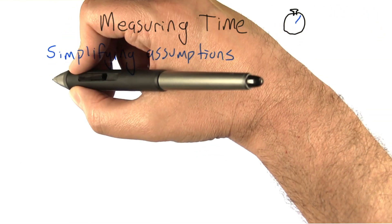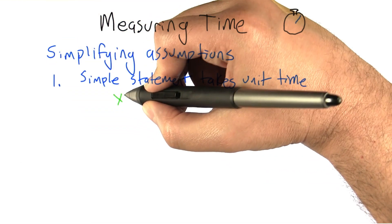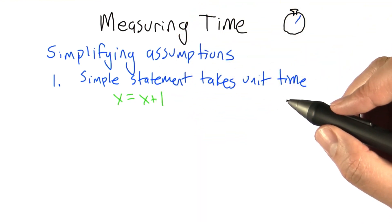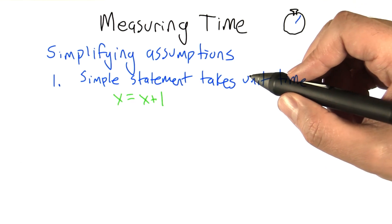Here's some of the assumptions that we're going to make. We count a simple statement, something like x equals x plus 1, as something that takes 1 unit of time. And we're going to count up the number of units of time an algorithm takes to run.